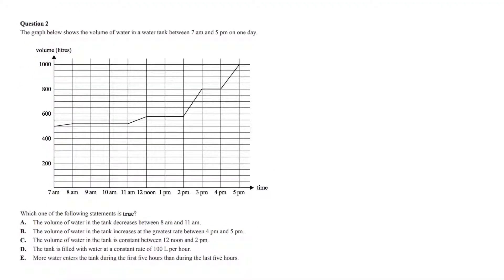Question 2. The graph below shows the volume of water in a water tank between 7am and 5pm on one day. The question is asking to choose the statement that is true. Option A. The volume of water in the tank decreases between 8am and 11am.